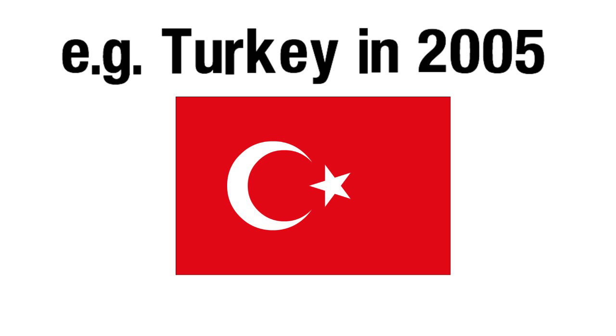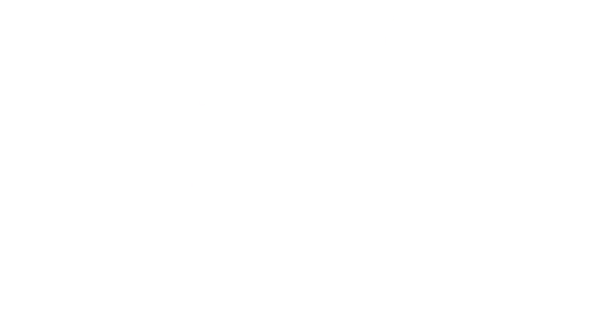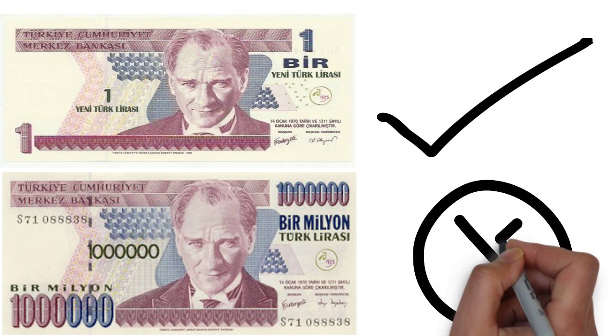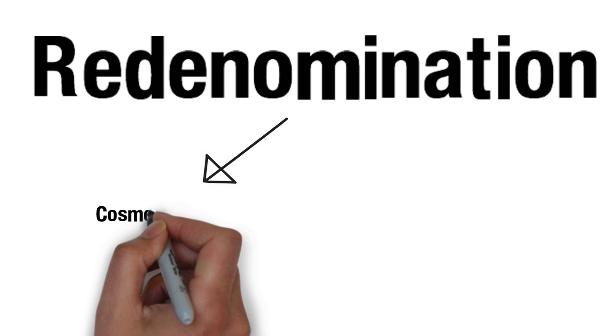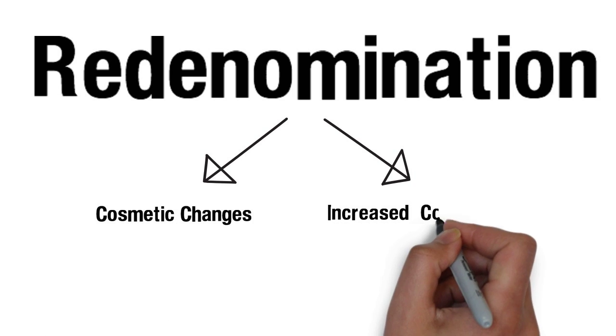For example, in 2005 Turkey introduced the new Lira, which is worth 1 million old Lira. Although Redenomination may provide cosmetic changes and create more confidence, the underlying fiscal problems tend to remain.